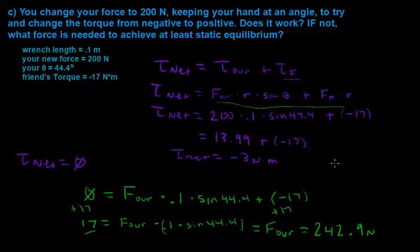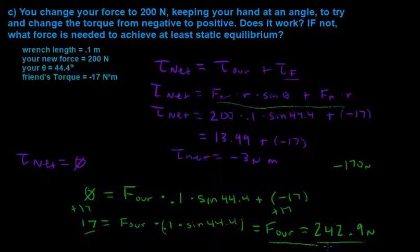So whereas our friend's force was only 170 newtons, we need this amount of force at the angle that we're at in order to even just stop him from making this torque negative. And that's a lot of force, because our angle isn't 90 degrees like his is. And so with that, our problem and this part is finished.